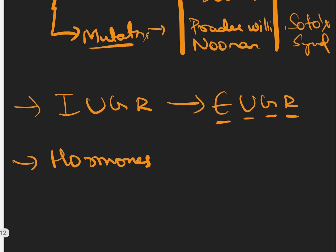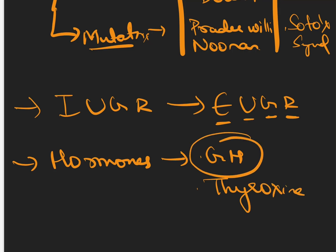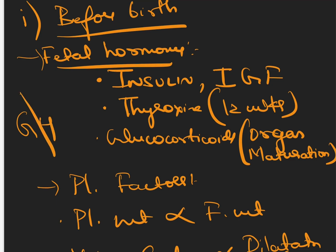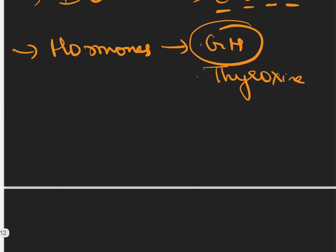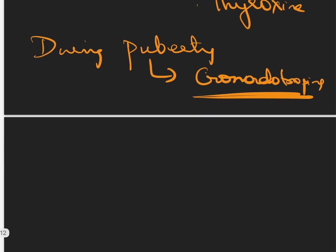Hormones also influence growth after birth, such as growth hormone and thyroxine. Remember: growth hormone is never a hormone for fetal growth — this is an important MCQ point. But after birth, growth hormone is very important for the child's growth. During puberty, gonadotropins act as growth hormones and help in growth spurt. Before puberty, growth hormone and thyroxine are the important hormones after birth.